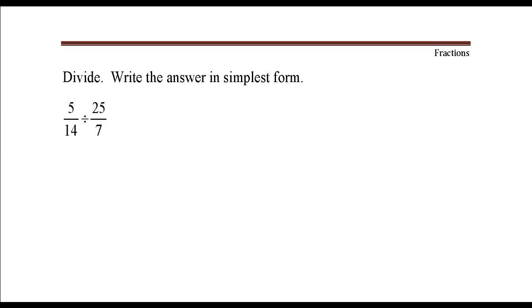I'm going to write this division problem as a multiplication problem. 5 over 14 divided by 25 over 7 is the same thing as 5 over 14 times the reciprocal of 25 over 7. That would be 7 over 25.